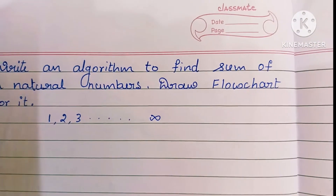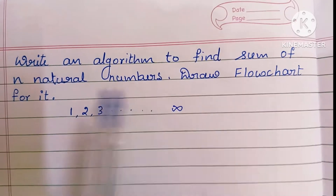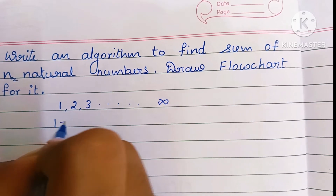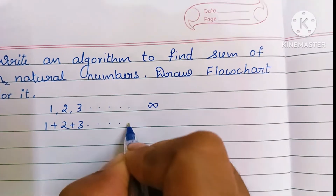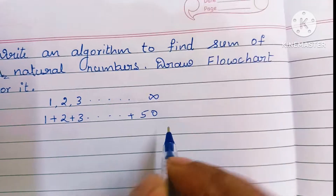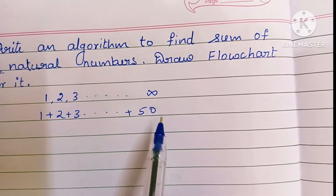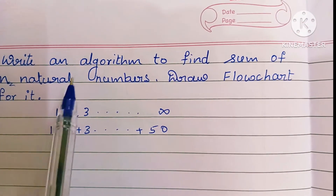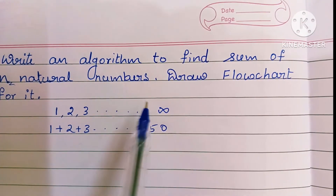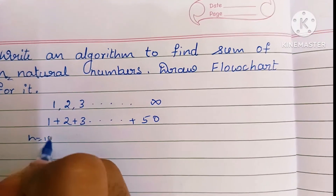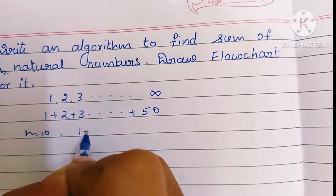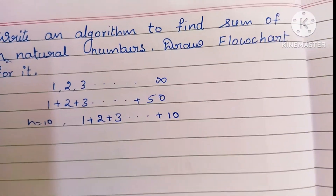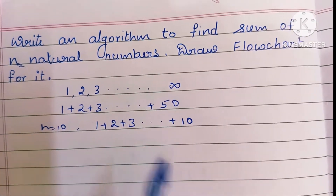Here we have to find the sum of n natural numbers. For example, if n value is 50, we have to find the sum of 1 plus 2 plus 3 up to 50. We have to find the sum of 1 to 50 natural numbers. Similarly, if n value is equal to 10, we have to find the sum of 1 plus 2 plus 3 up to plus 10 — the sum of the first n natural numbers.